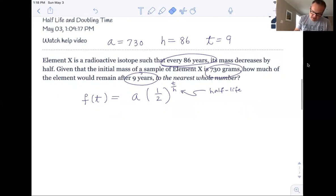Hey, let's plug in. Let's try to get the answer here. So what do we want? We want to know what's going to happen after nine years. So that's my T. I start at 730 grams of whatever this isotope is. I keep halving it.